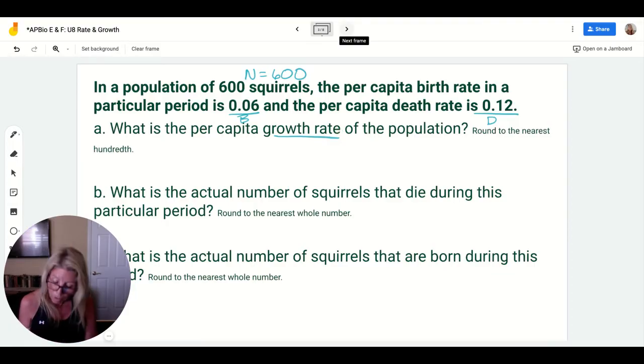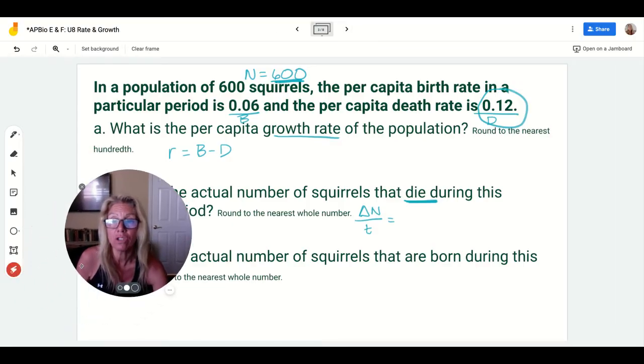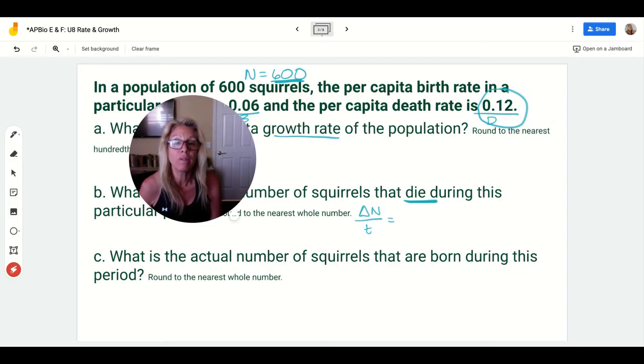Let's look at three typical questions they might ask you. What is the per capita growth rate of the population? The growth rate, you're going to be looking at r which equals the birth rate minus the death rate. In the second question they ask, what is the actual number of squirrels that die during this particular period? To know the change in your population over time, the number that die - my death rate is 0.12 - I need to multiply that by the number of individuals in my population, which is 600. Similarly, what is the actual number of squirrels that are born during this period? Take a look at your birth rate, look to see how big your population is, and pause me just for a minute before I go over the answer.